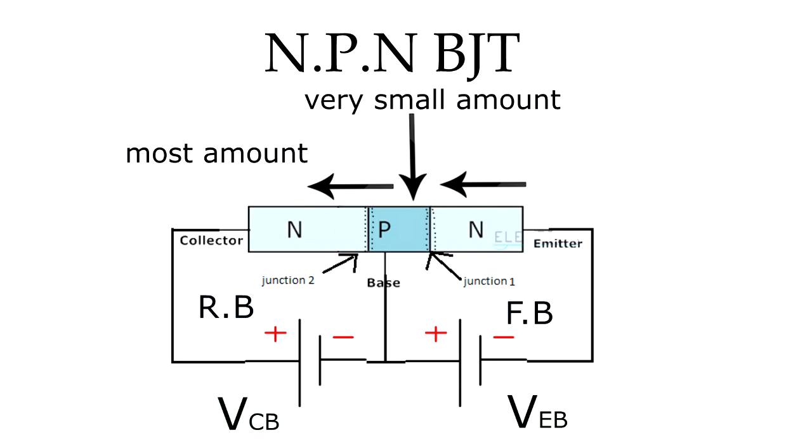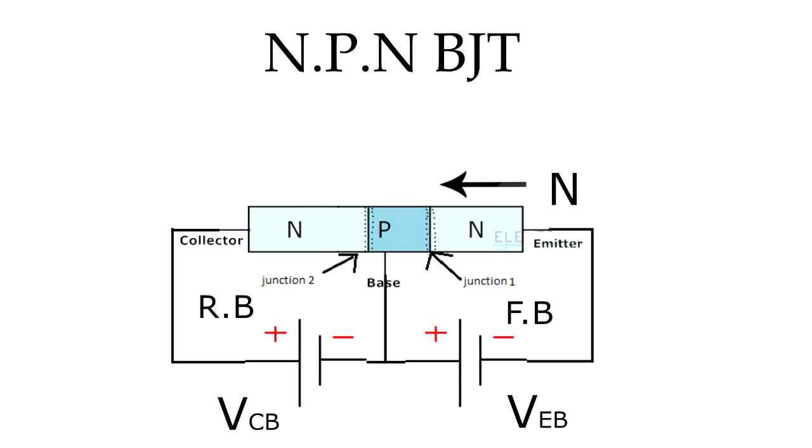Let's assume N is the number of electrons passed from the emitter to the base region and the collector region. Out of which, one minus alpha N combine with the holes in the base region, and alpha N is moved to the collector. That's what happened: only 2 to 5% of electrons combine in the base and 95 to 98% pass to the collector.